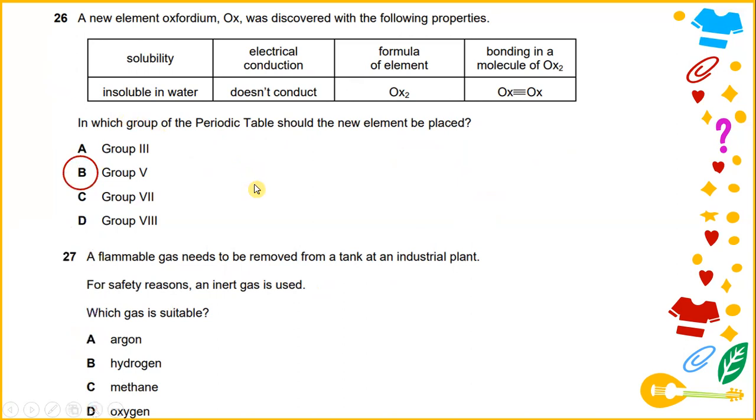A flammable gas needs to be removed from a tank at an industrial plant. For safety reasons, an inert gas is used. Which gas is suitable? The answer for number 27 is argon.